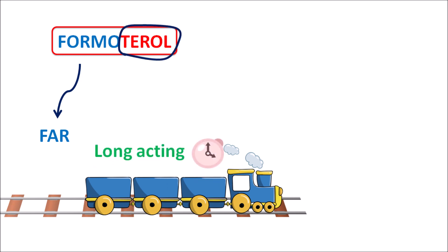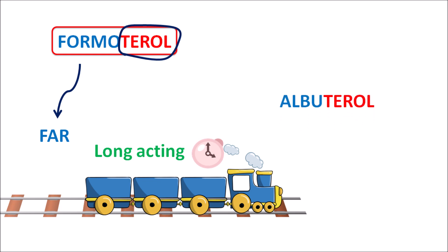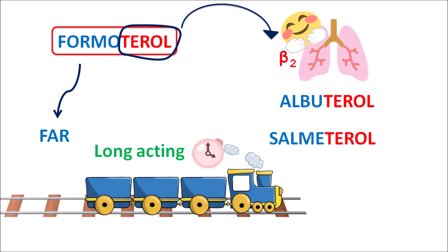The suffix '-terol' indicates this drug belongs to a group of drugs ending with a similar suffix. For instance, albuterol, which is also called salbutamol, and salmeterol — all these drugs are having a similar suffix '-terol'. So these drugs are acting on the beta-2 adrenergic receptors, acting on the bronchioles as bronchodilators. Albuterol is a short-acting beta-2 agonist, known as SABA, whereas salmeterol is classified as LABA, long-acting beta-2 adrenergic agonist.